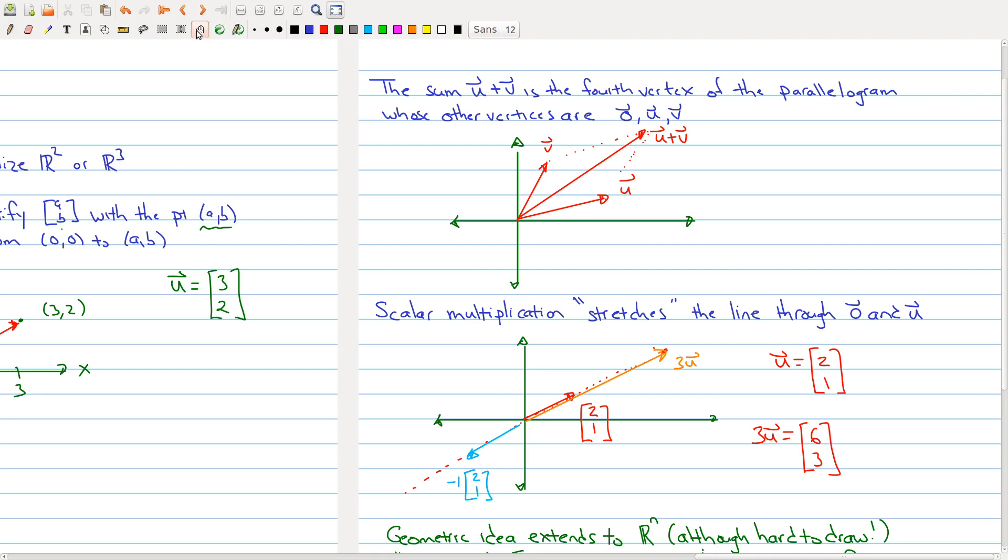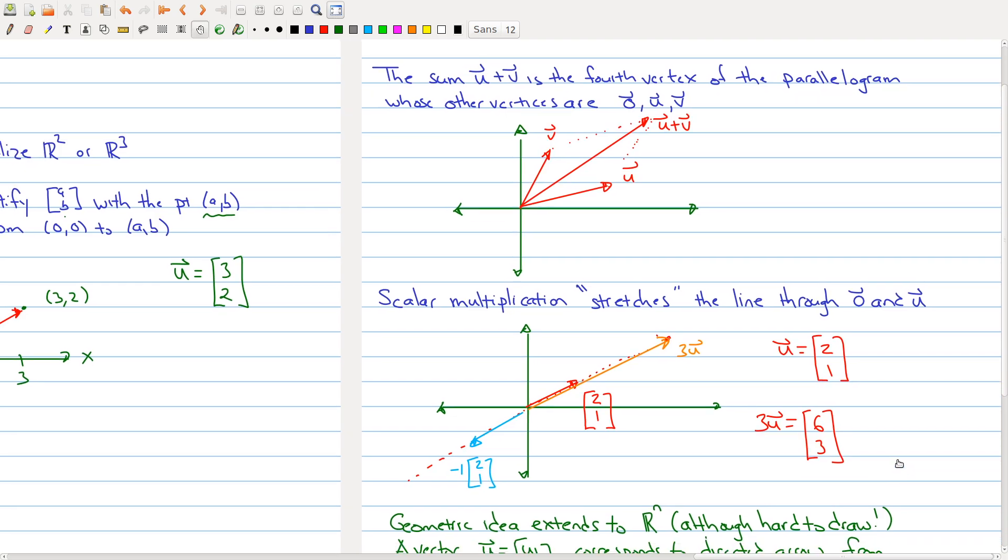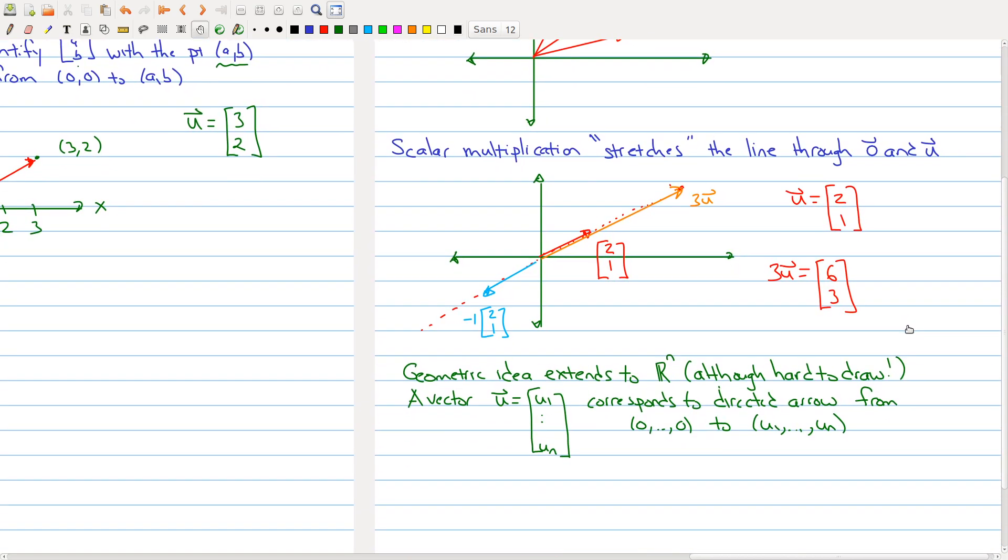Now, it's easy to see that both of these ideas of vector addition and scalar multiplication would work also in R3. In that case, we would take a vector which now has three components, and we would identify it with the corresponding point in R3. And actually, this idea generalizes to Rn.